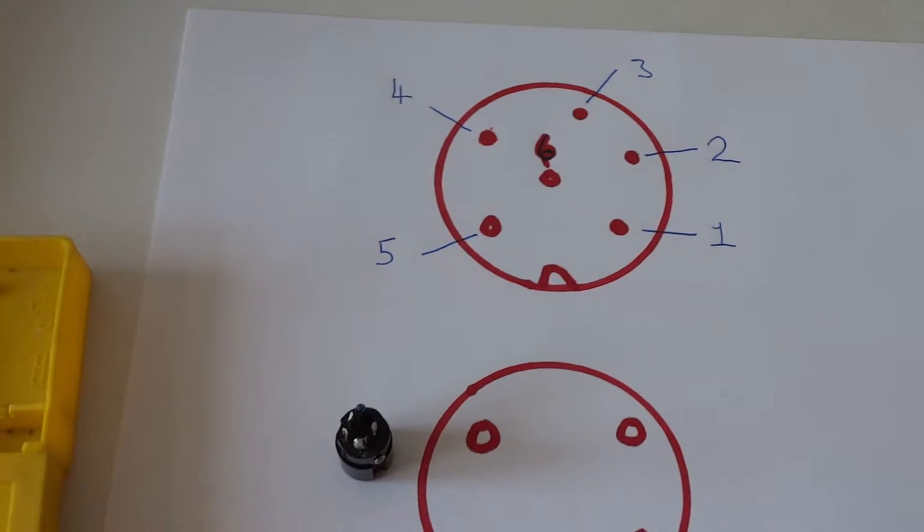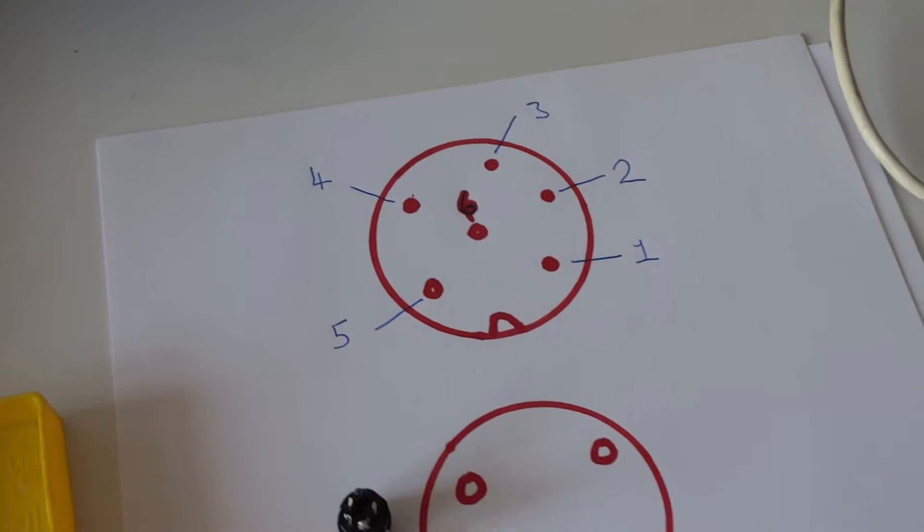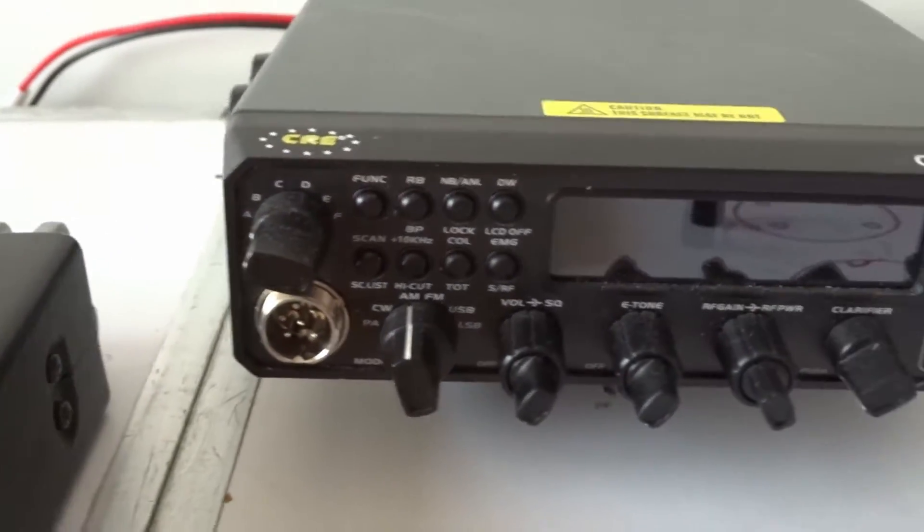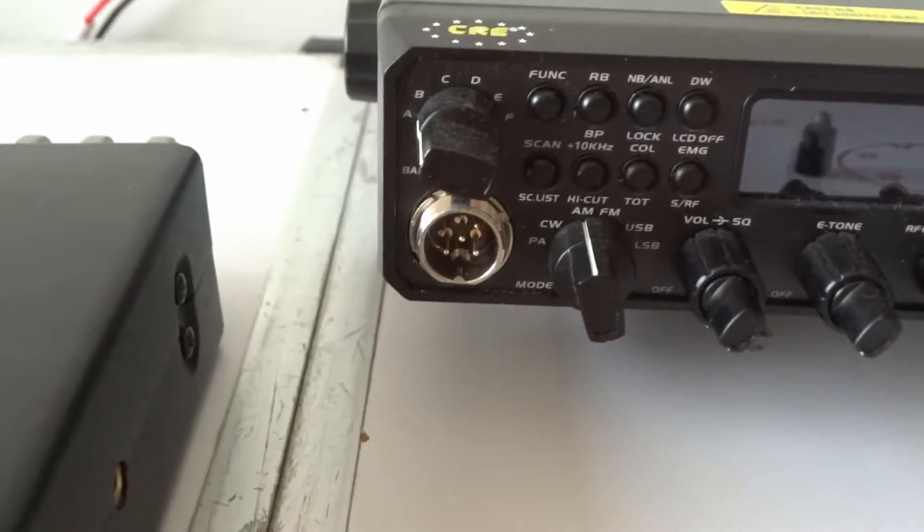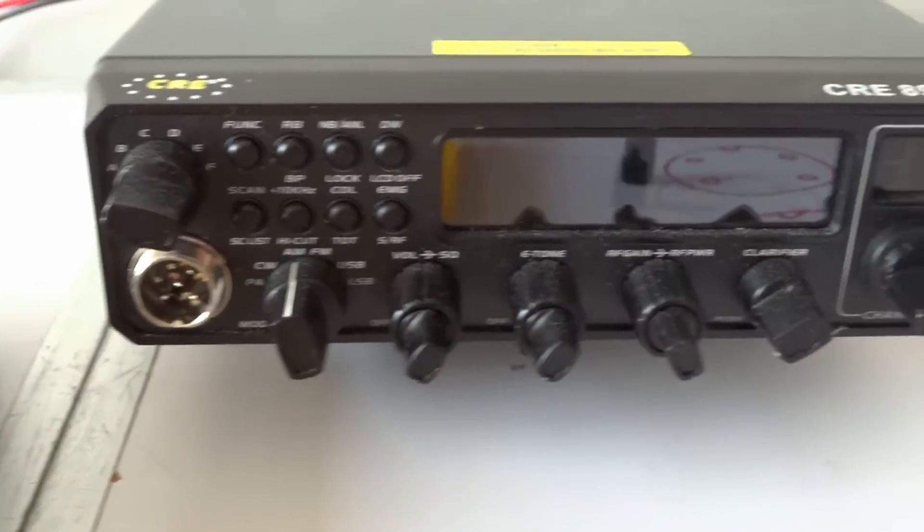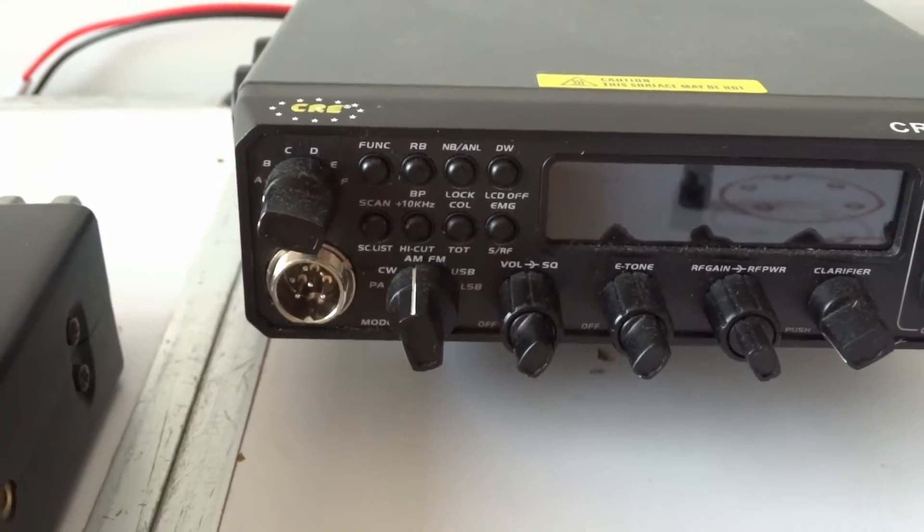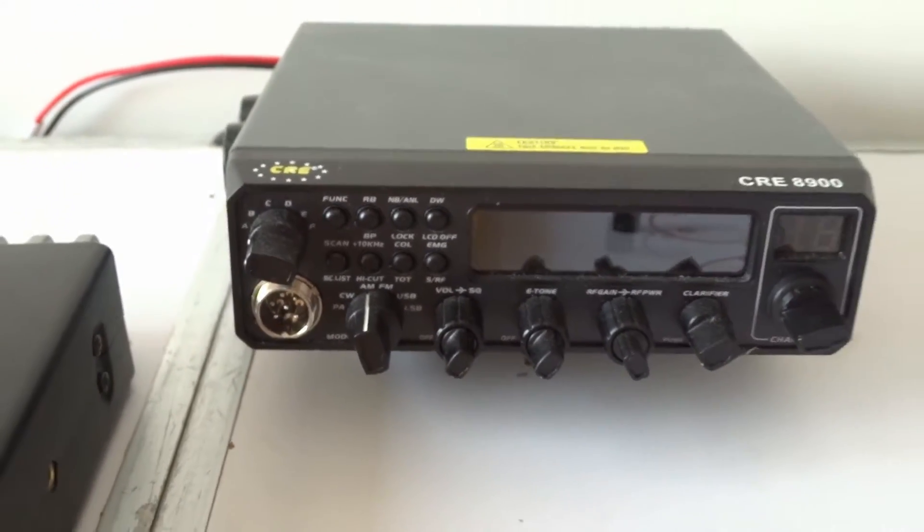You don't want eight volts coming out of that pin and then accidentally going back into one of the other pins and damaging your radio. On this radio the mic wiring is exactly the same but on the center pin you get 12 volts out. The 8900 and 9900 mics are interchangeable.